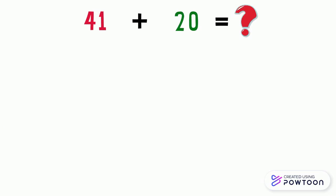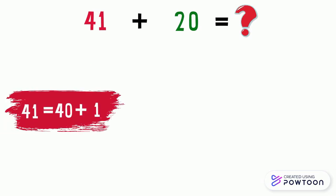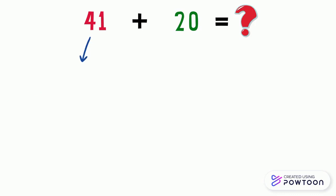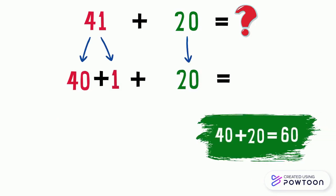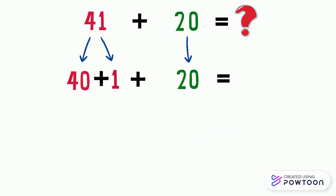41 plus 20. The number 41 equals 40 plus 1. So, 41 plus 20 equals 40 plus 1 plus 20. First, let's add the tens, which are 40 and 20. 40 plus 20 equals 60. Now add the ones, which is 1. So the answer will be 61.